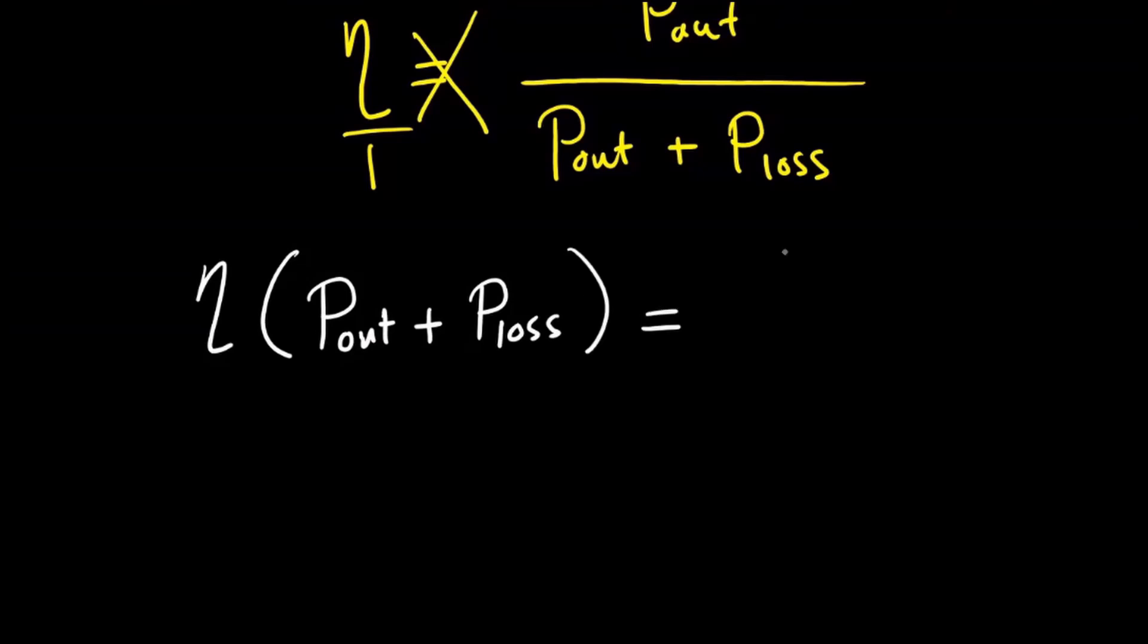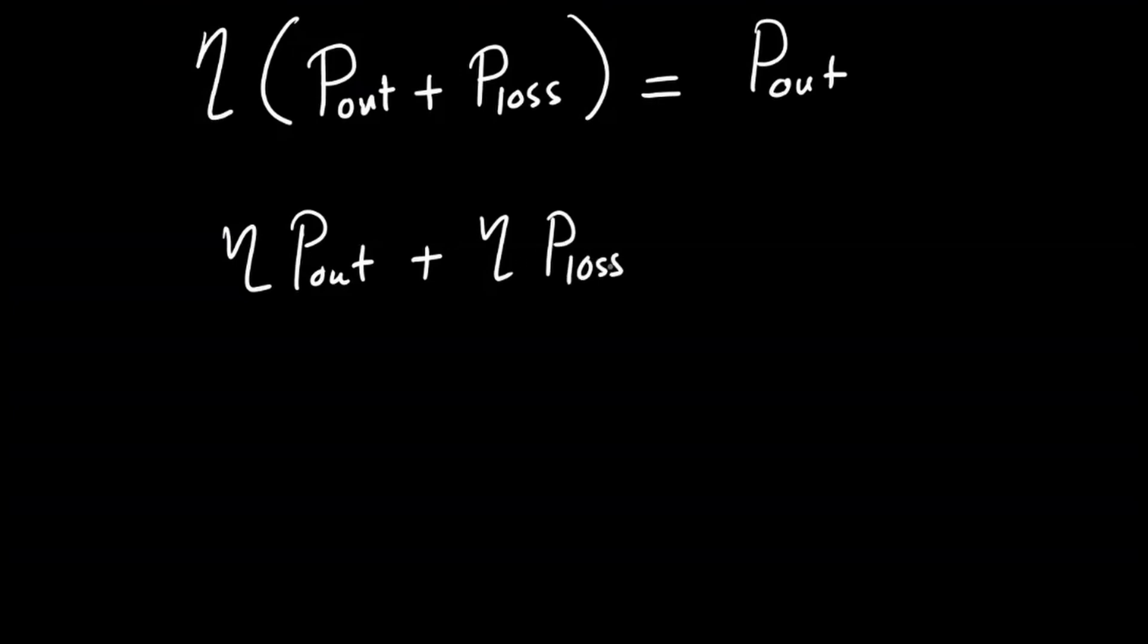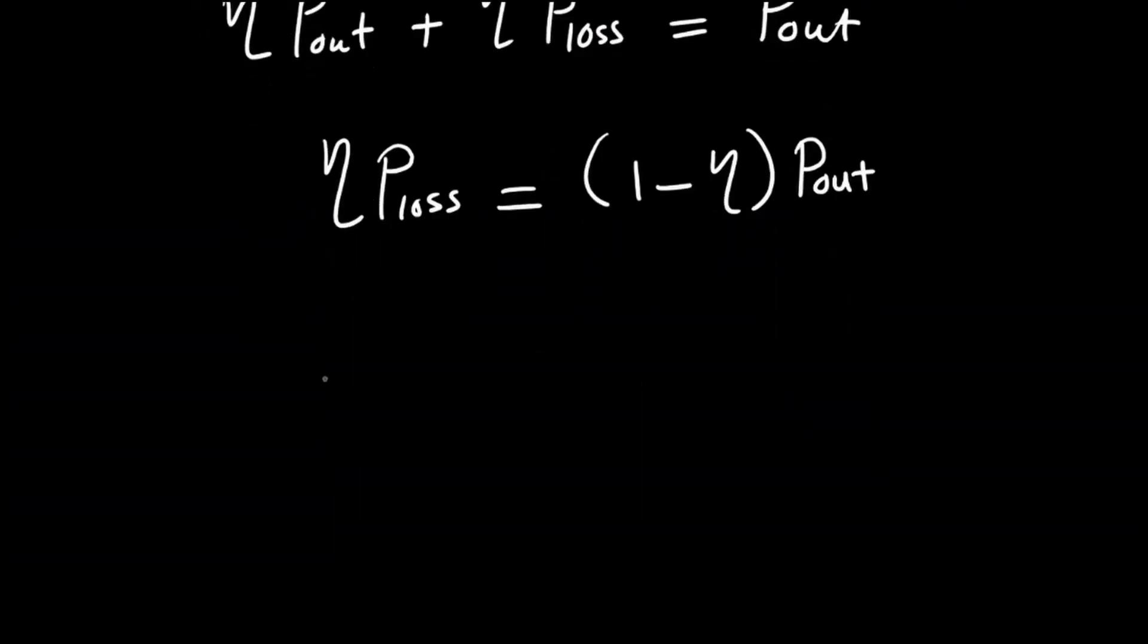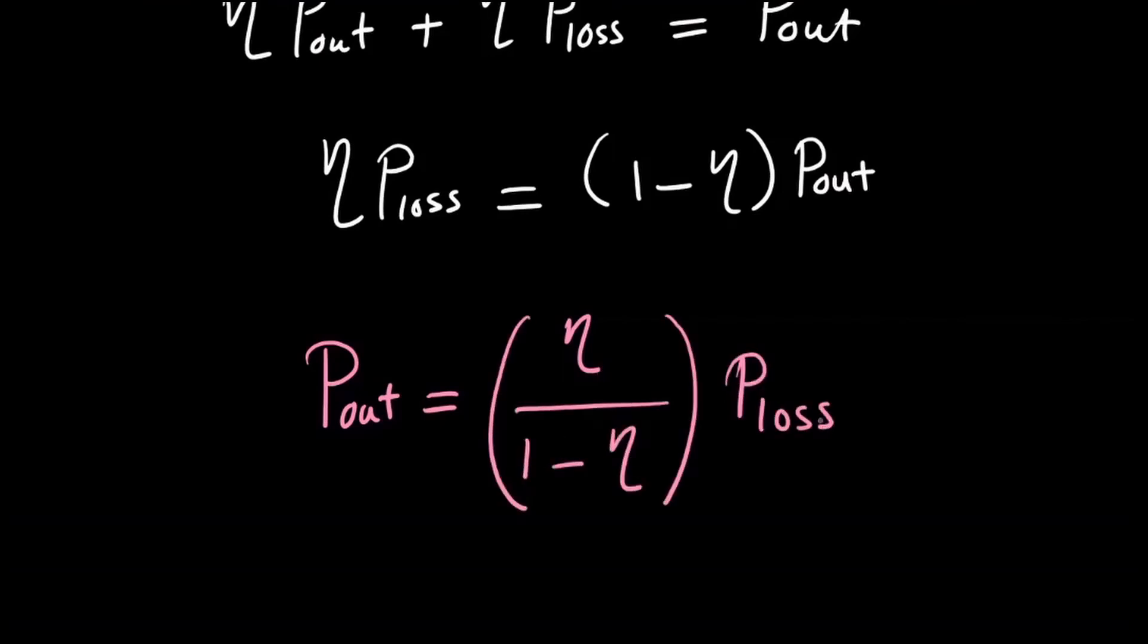The efficiency times the output power plus the power loss equals the output power. Taking all common factors aside, the output power finally equals the power losses times the efficiency over one minus the efficiency.